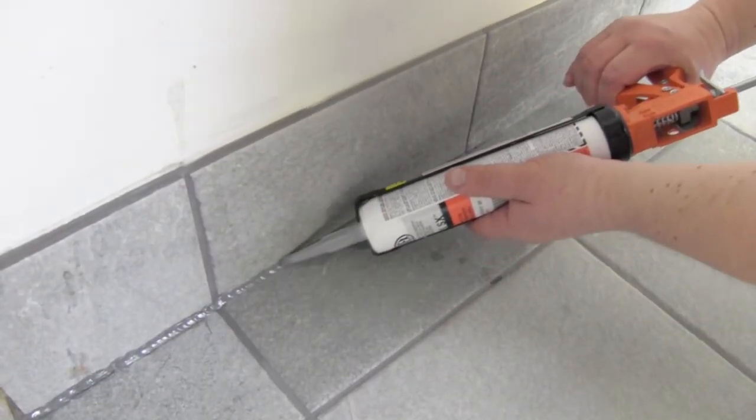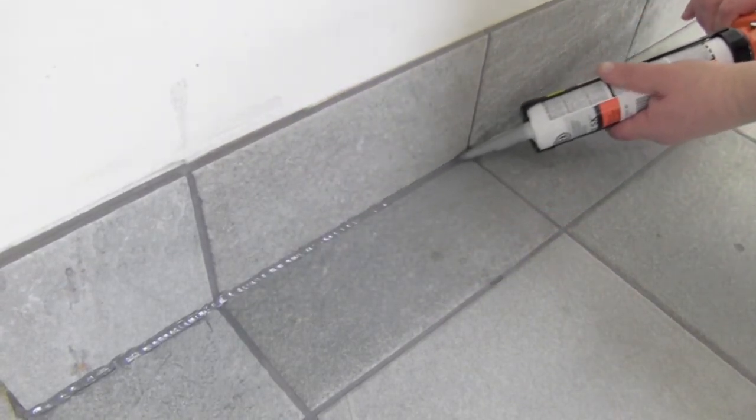Perimeter and expansion joints can be filled with a suitable soft joint filler like Ardex SX 100% silicone sealant or Ardex CA 20P multipurpose construction adhesive and sealant.